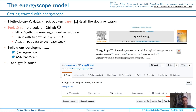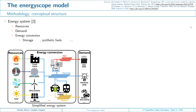Now Gautier will present the methodology and some results. We like to represent an energy system with three boxes: at the very beginning we have the resources, which we can import from other countries or locally produce; at the very end we have the demand — the heat, electricity, and mobility demand; and in between we have hundreds of technologies collaborating at the same time to convert resources into energy carriers to meet demand.